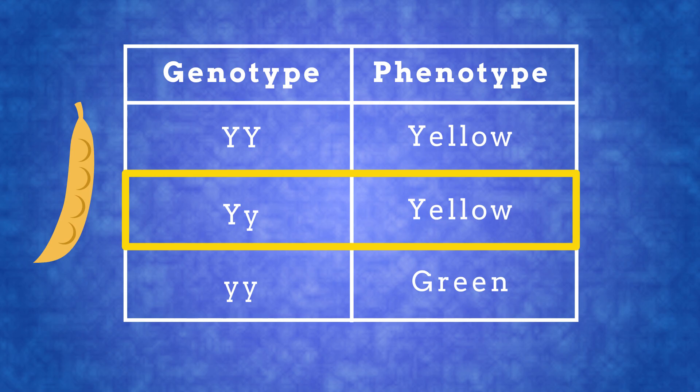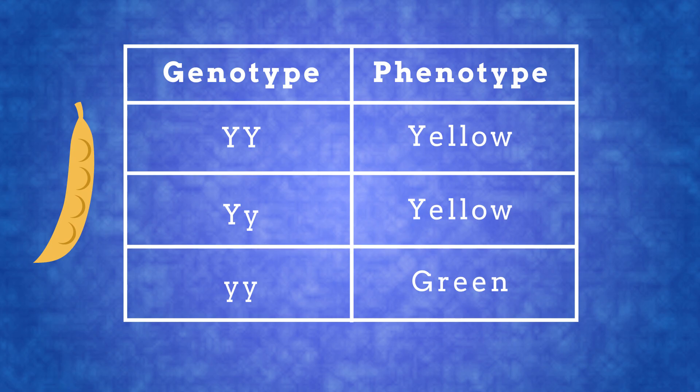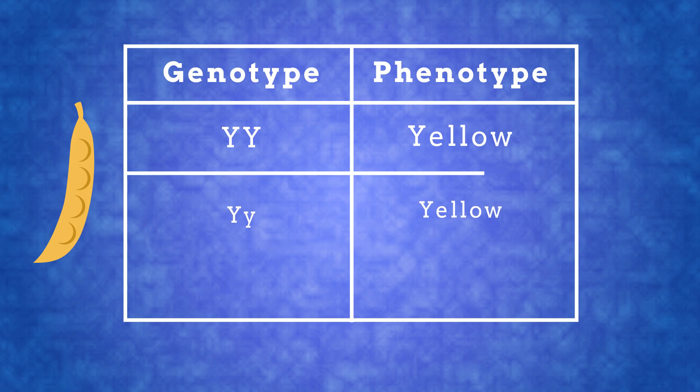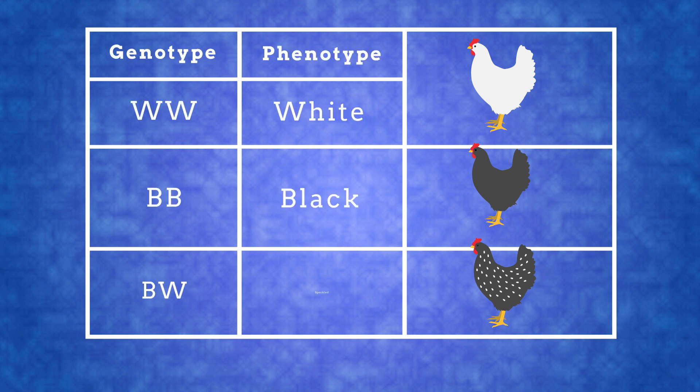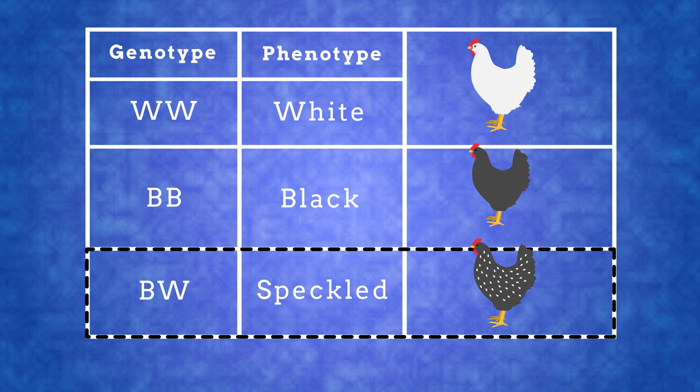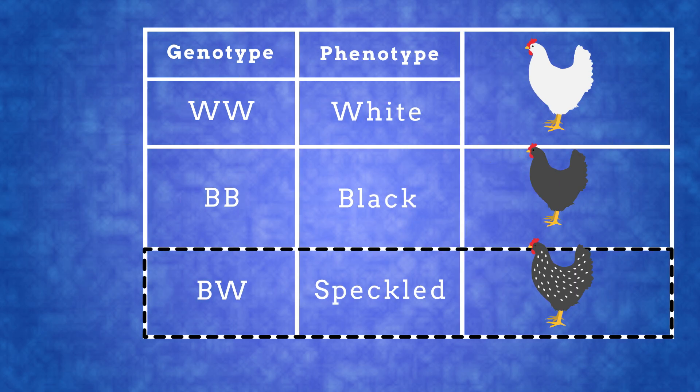In co-dominance, the alleles are both expressed in the same phenotype, so you can end up with a mixture. Neither allele is dominant. This happens with chickens — neither the black nor the white allele is dominant, so the BW genotype gives a speckled phenotype.